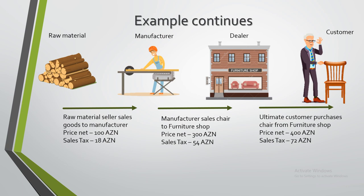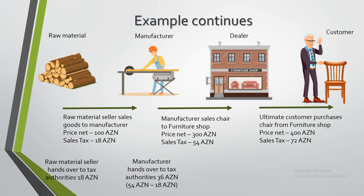What does it mean? Let's see an example. In the first stage after the sale, the raw material seller hands over 18 ASEAN to the tax authorities, as the raw material seller is the first to apply. But in the second stage, after the manufacturer's sales to the dealer, the manufacturer received 54 ASEAN sales tax from the dealer. Now he will hand over to the tax authorities only the net amount, less what was paid to the raw material seller. After deducting the previously paid amount of 18 ASEAN from the received 54 ASEAN, the manufacturer should hand over to the tax authorities 36 ASEAN.